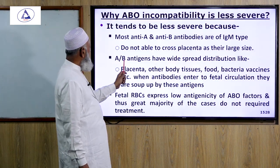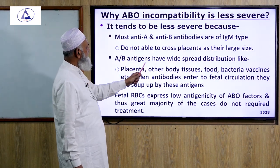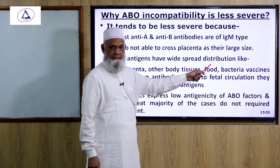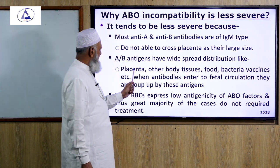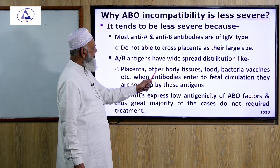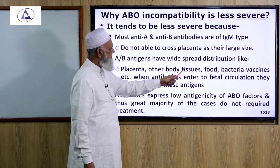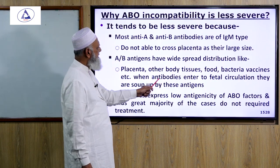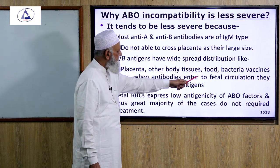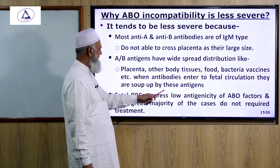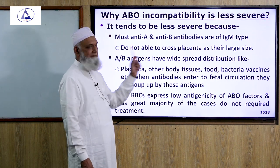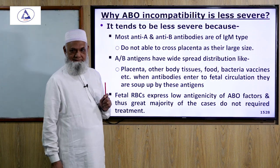A and B antigens have wide distribution, found in the placenta, other body tissues, food, bacteria, vaccines, etc. When maternal antibodies enter the fetal circulation, they are soaked up by these widely distributed antigens, reducing the amount available to attack fetal red blood cells.